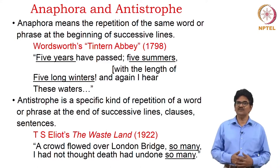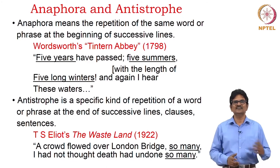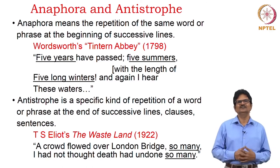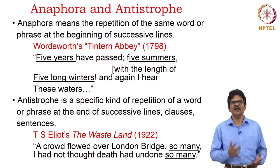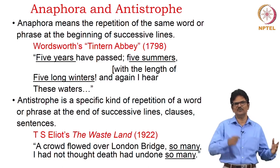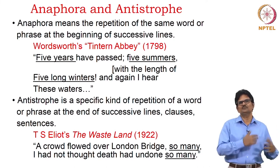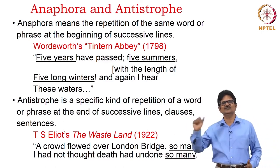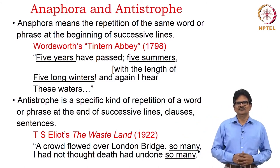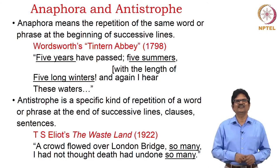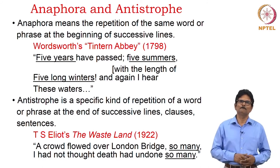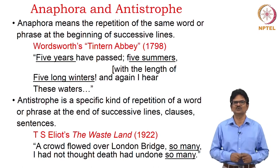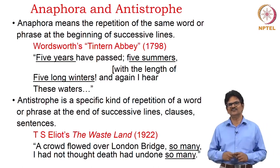Anaphora and antistrophe are two other figures of speech. Anaphora means the repetition of the same word or phrase at the beginning of successive lines. In Wordsworth's poem 'Tintern Abbey,' the expression 'five years' is repeated at the beginning and in the middle: 'Five years have passed, five summers with the length of five long winters, and again I hear these waters.' Antistrophe is a specific kind of repetition of a word or phrase at the end of successive lines, clauses, or sentences.